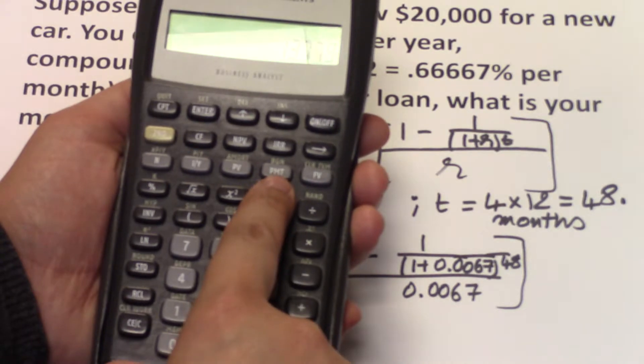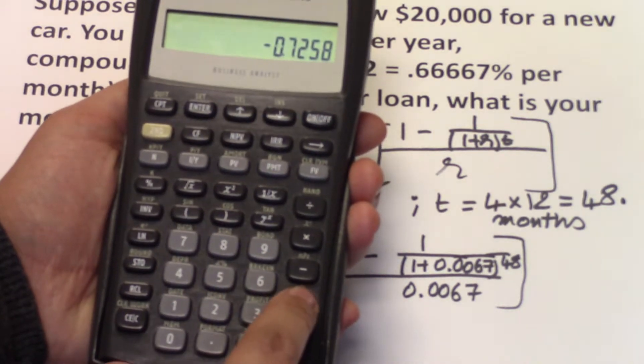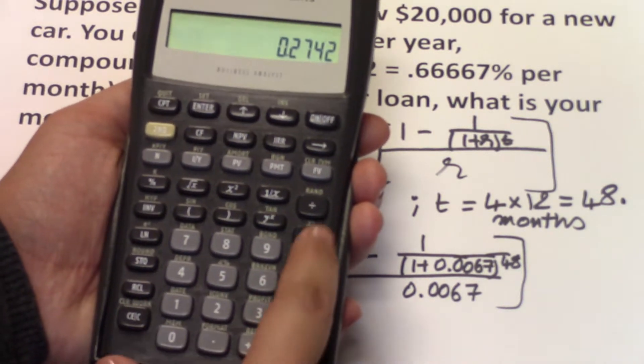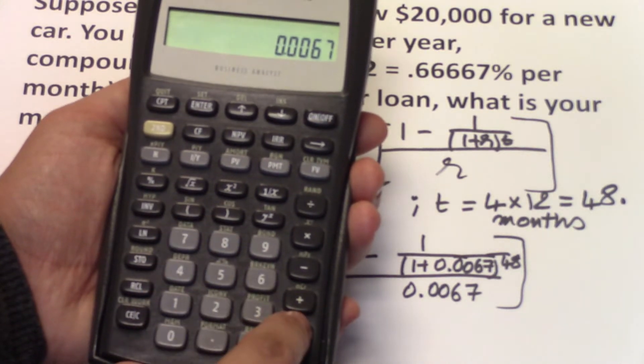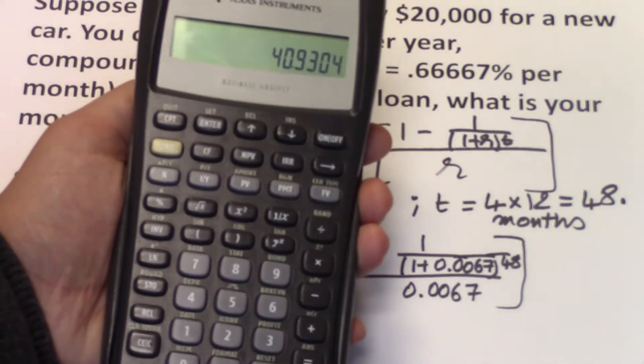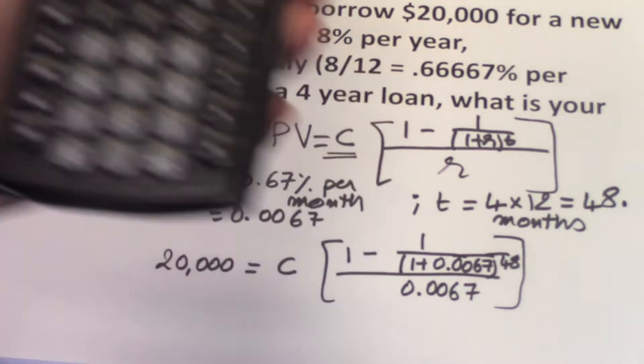You inverse that number, minus 1, divided by 0.0067. This will give us a value of 40.93.